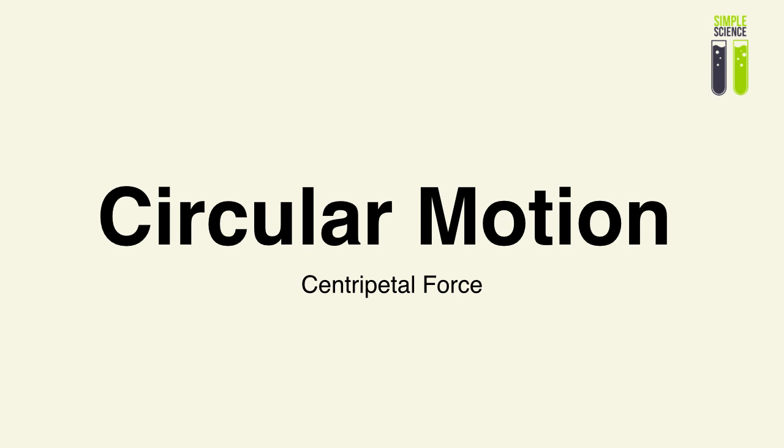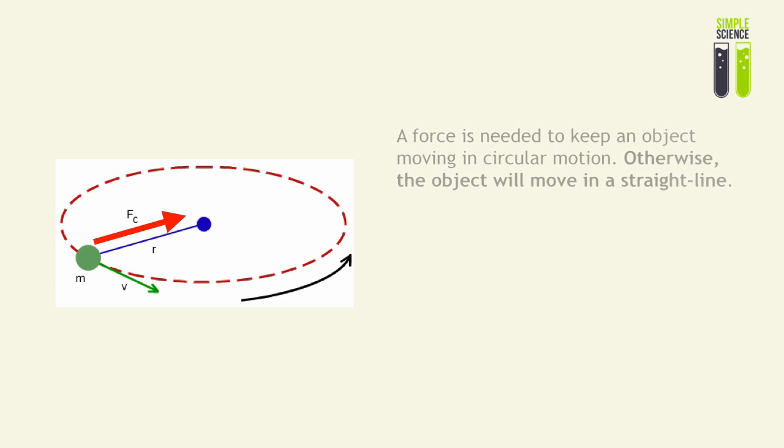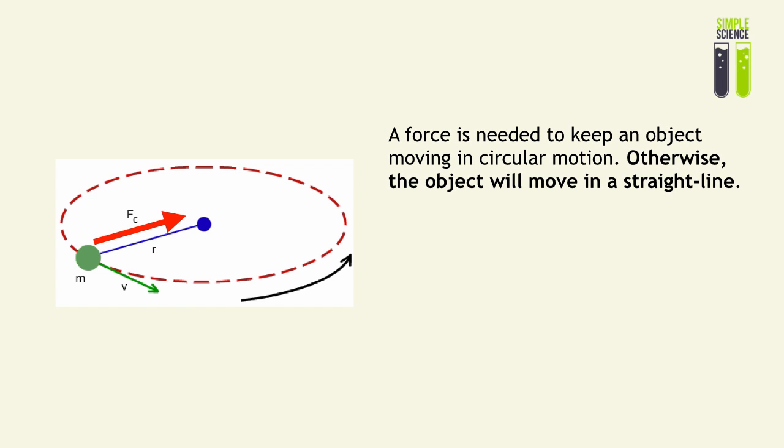When an object is moving in circular motion, it is essential that there is a force that keeps it in this circular motion. The force responsible for keeping this object in circular motion is the centripetal force. For example, a force is needed to keep an object in circular motion; without the force, the object will move in a straight line. It will move with a tangential velocity V, and the force needed to keep this object moving in the circle is known as the centripetal force.